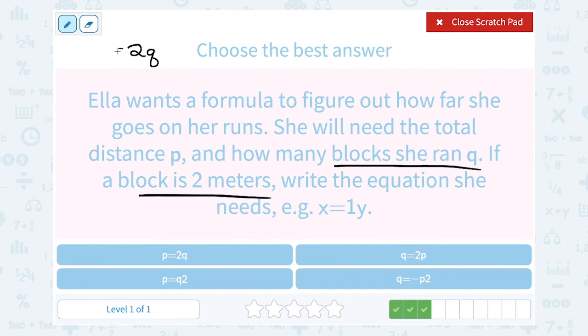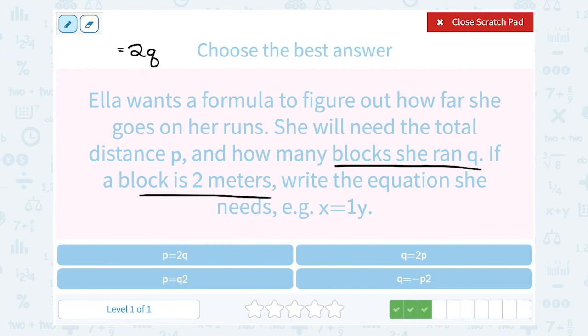Okay, and that would be equal to her total distance in meters. And the total distance is P. So we're going to say P is equal to 2Q.